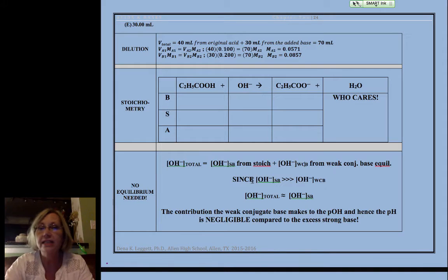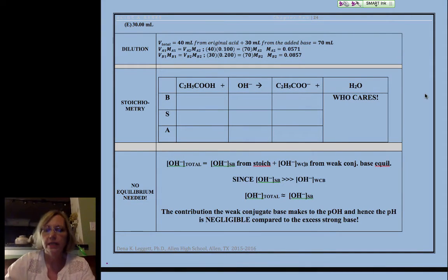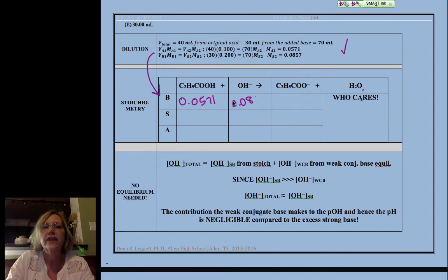We are now past the equivalence point. Here's our dilution up at the top. If you're having trouble with that, remember to come see me so I can help you. Now we're going to move that dilution step, which feeds into the before, 0.0571, 0.0857, and you will notice we now have excess strong base.